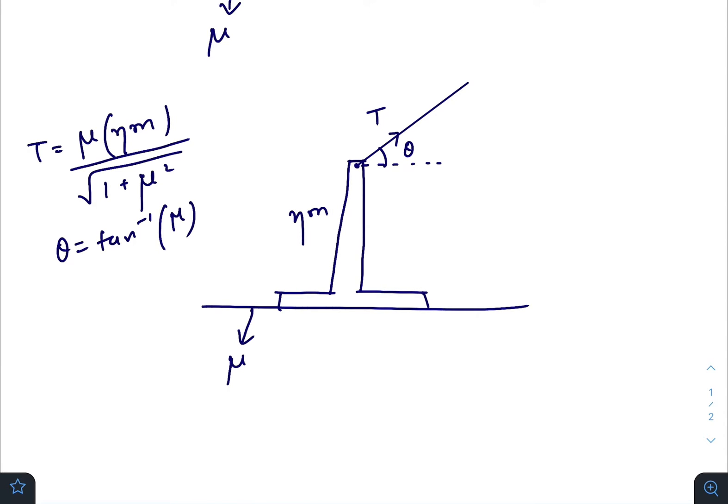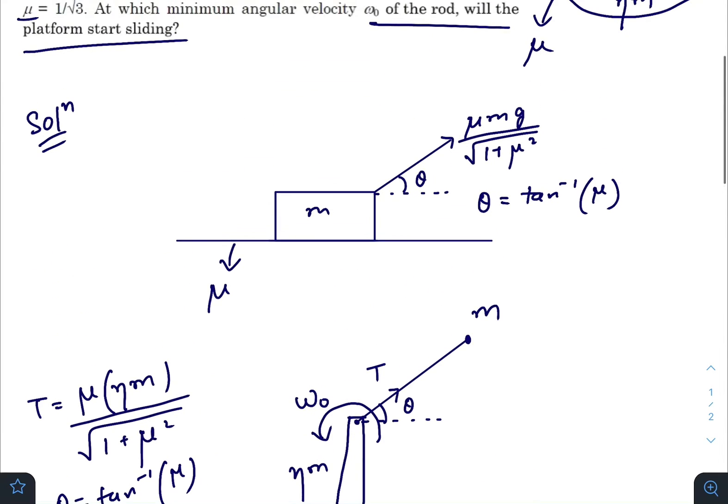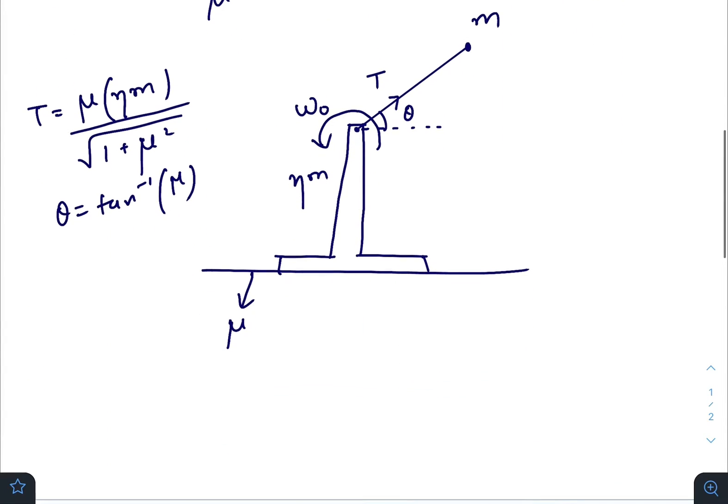Now who will apply this force? This force will be applied due to the rotation of this mass. As this mass is rotating in a vertical circle, let us consider the minimum angular velocity be ω₀, as given in the question.